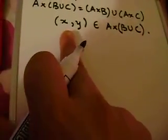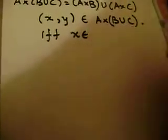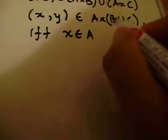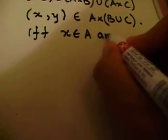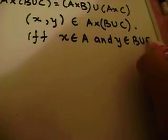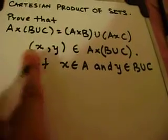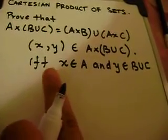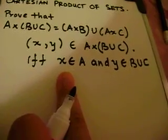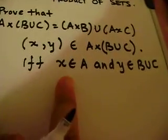Well, if this is true, then we know that if and only if the first element X belongs to A and Y belongs to B union C. Just by the definition of the Cartesian product, if X, Y belongs to A cross B union C, then this means that X belongs to A and Y belongs to B union C. Notice the if and only if argument works in both directions.